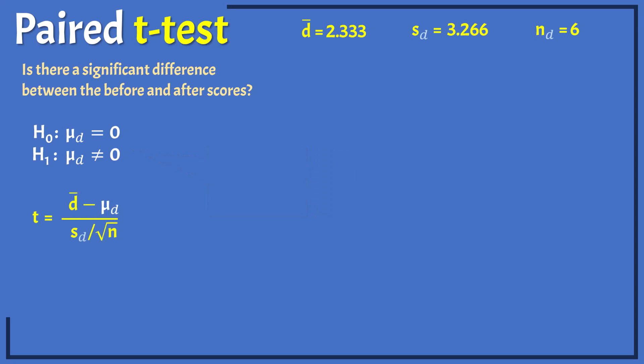Here again is the test statistic. The denominator here is the standard error of the mean of the differences, which computes to 1.333. Mu d here is equal to 0, as seen in the null hypothesis. Thus, t is essentially equal to d bar divided by the standard error, which gives 1.750.